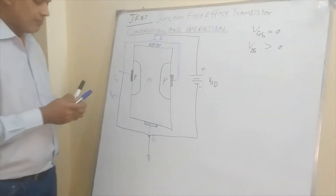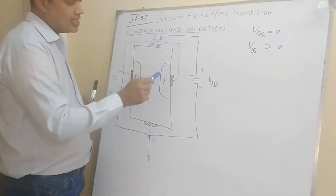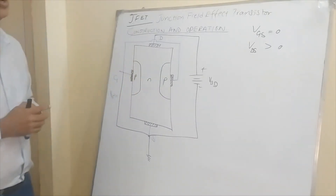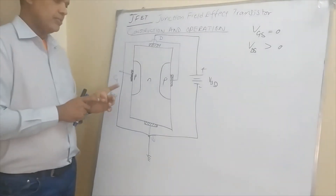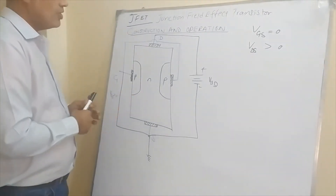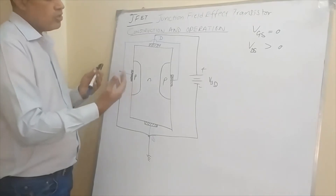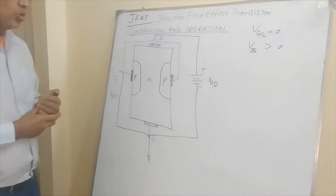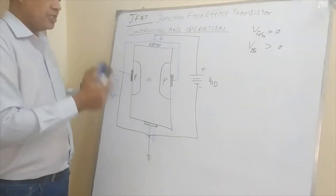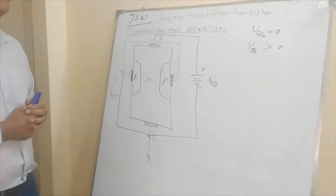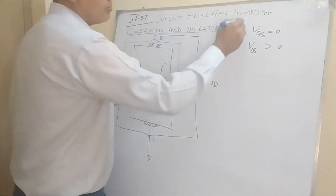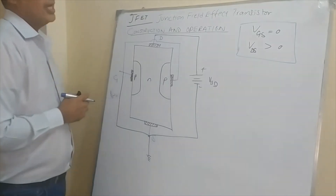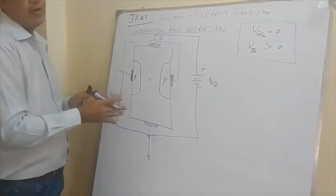With VGS equal to zero and VDS greater than zero, the drain is at a higher potential than the source. Looking at the PN junctions, the N-type is at higher voltage and the P-type is at lower voltage. Using a simple diode analogy, with low voltage on the P-side and high voltage on the N-side, this junction is reverse-biased.